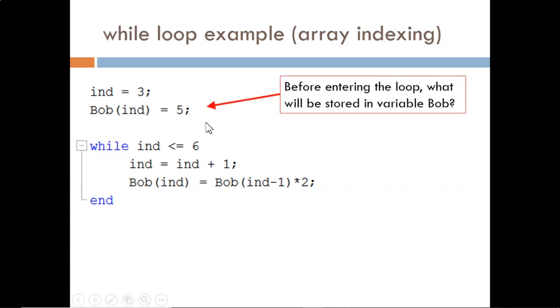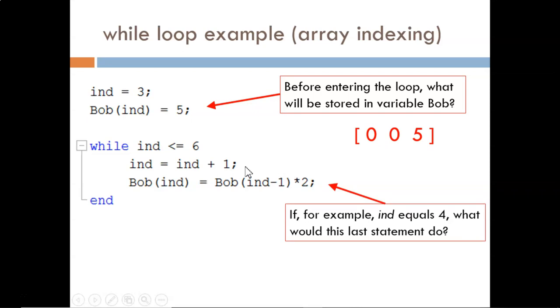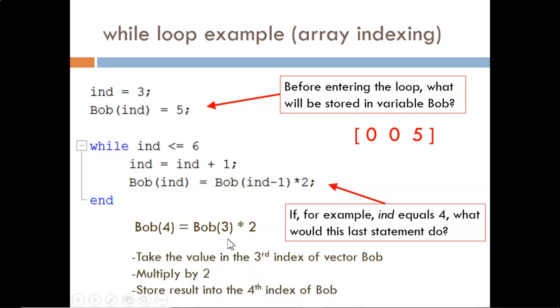BOB will be a three element vector with two zeros and a five. Why? We assign the third index in BOB to be a five. By default, MATLAB backfills zeros to make the vector large enough. Within the loop, the first command is a simple but important one. The variable IND will increase by one each time through the loop. The next command is more complicated. What do you think would happen in the case that IND is four? Let's go one step at a time. First, the variable IND is replaced by its value four, providing this statement. This statement means extract the value in the third index from BOB, then multiply by two, then assign that product into the fourth index of BOB.